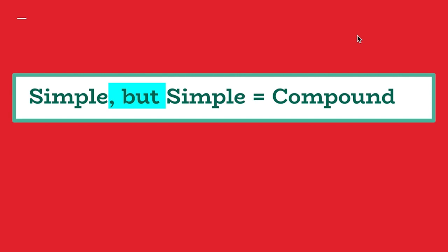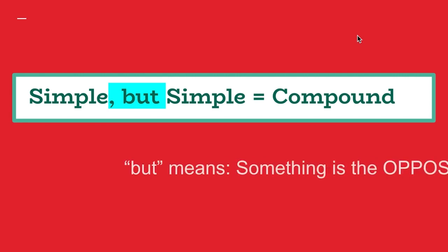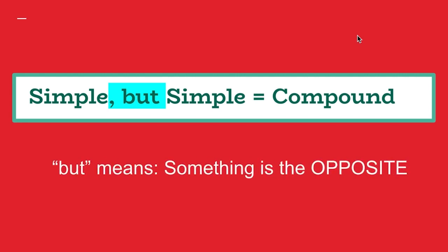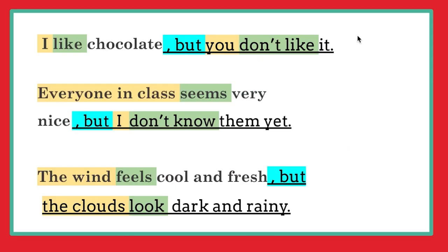You may also use the fanboy 'but.' But has a different meaning — something about the sentences is the opposite. It's also a compound sentence, but the meaning is a little different. For example: I like chocolate but you don't like it. Everyone in class seems very nice, but I don't know them yet. The wind feels cool and fresh, but the clouds look dark and rainy. Something is the opposite. Both sentences are true, but the meaning, the feeling, the emotion — something is the opposite.